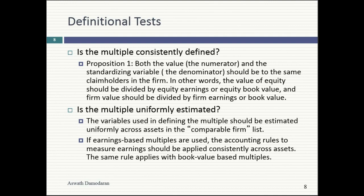Before you feel too superior — if you've ever used price-to-sales, you're guilty of the same sin. The sector where price-to-sales is used most frequently is technology, and they've gotten away with it because tech companies tend to have no debt. But even there, when I take the market cap of Apple, there's $200 billion in cash included — it biases you away from firms with a lot of cash. So check for consistency — you'll be amazed at how many multiples fail the test.